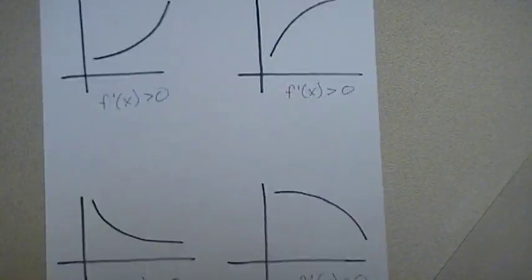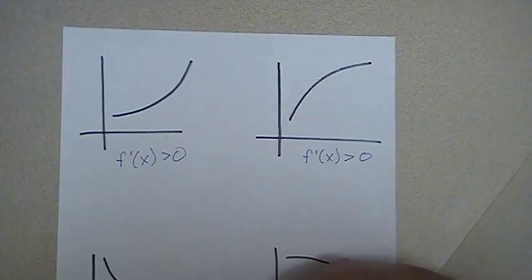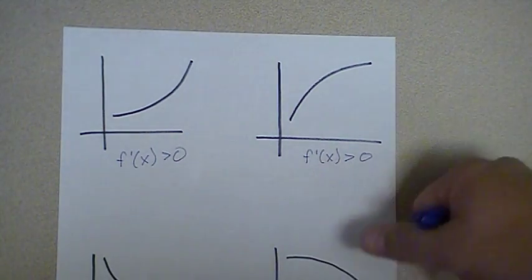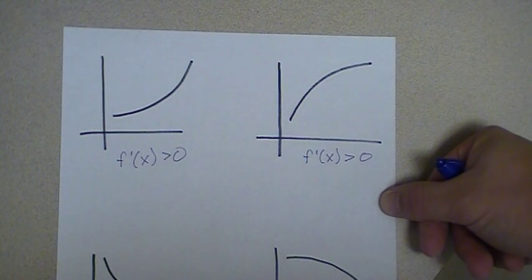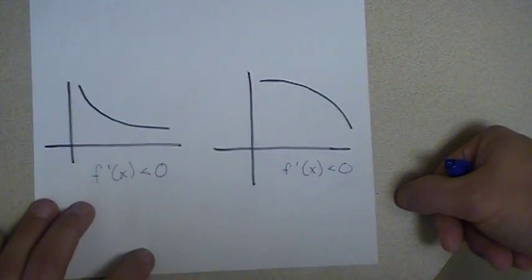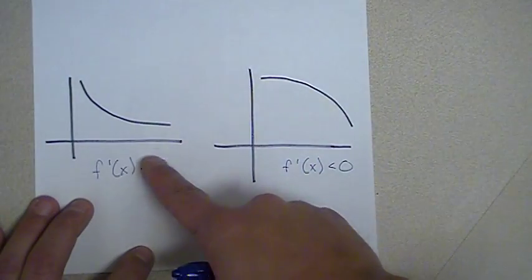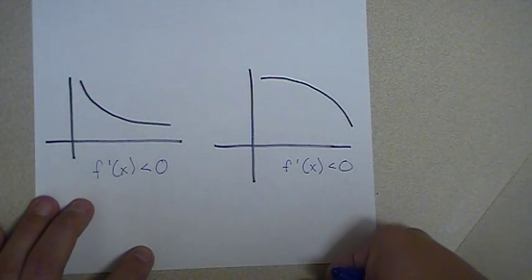You'd argue that these two graphs are increasing — they go up as we go from left to right. The fact that the derivative is positive everywhere on both of them is not a coincidence. An increasing graph will always have a positive derivative. And on a decreasing graph, going downward as we go from left to right, the derivative will always be negative.